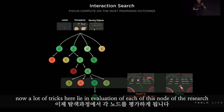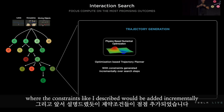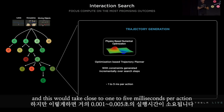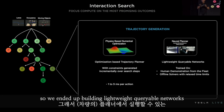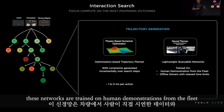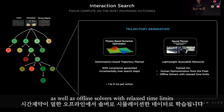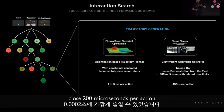A lot of the tricks here lie in evaluation of each node of the tree search. Inside each node, initially we started with creating trajectories using classical optimization approaches where the constraints would be added incrementally, and this would take close to one to five milliseconds per action. Even though this is a fairly good number, when you want to evaluate more than 100 interactions, this does not scale. So we ended up building lightweight queryable networks that you can run in the loop of the planner, trained on human demonstrations from the fleet as well as offline solvers with relaxed time limits. With this, we were able to bring the runtime down to close to 100 microseconds per action.